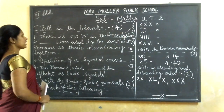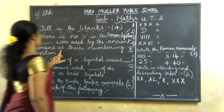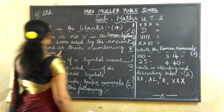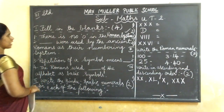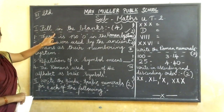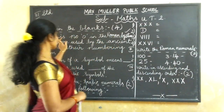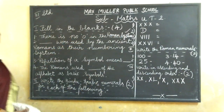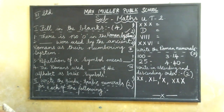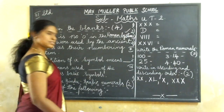Second one: dashes were used by the ancient Romans as their numbering systems. So, what is the answer? Shall I clean this one? Finished all of you correcting this one? No place to write, so I will clean this one. All corrected now — first one is: there is no zero in the Roman system.